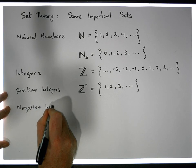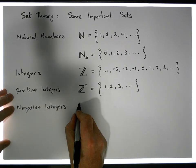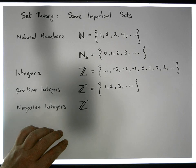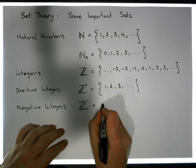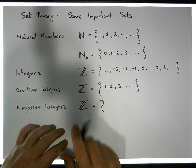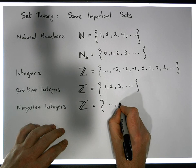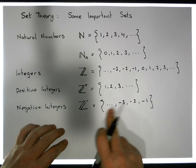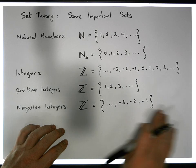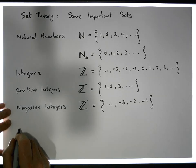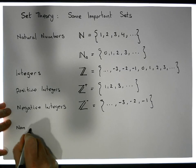Then we have the negative integers, symbolized by a bold Z with a superscript minus. Remember, zero is neither positive nor negative. The negative integers are: dot dot dot, minus three, minus two, minus one. The pattern continues out in that direction, and these are called the negative integers.